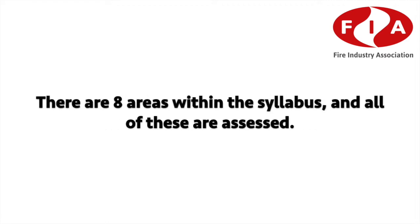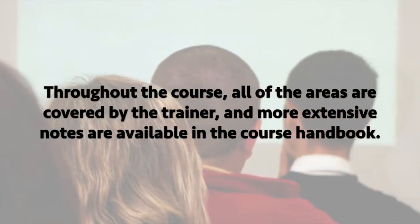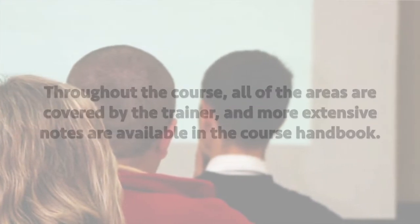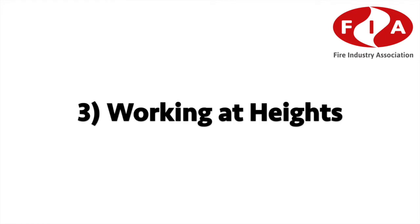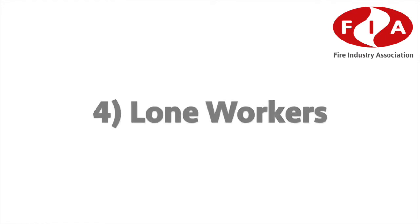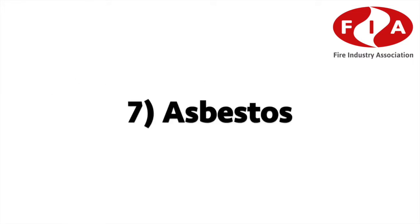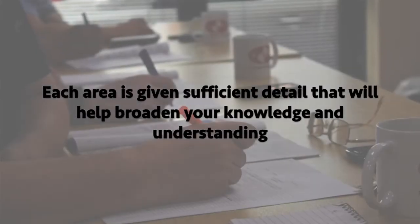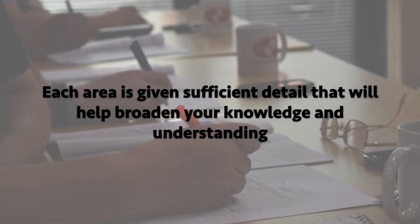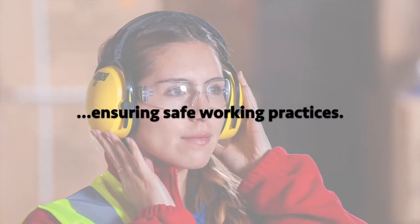There are eight areas within the syllabus and all of these are assessed. Throughout the course, all the areas are covered by the trainers and more extensive notes are available in the course handbook. The eight areas of study are: Health and Safety Legislation, Manual Handling, Working at Heights, Lone Workers, RIDDOR, PPE, Asbestos, and COSH. Each area is given sufficient detail to help broaden your knowledge and understanding, enabling you to effectively manage all of these areas of health and safety and ensure safe working practices.